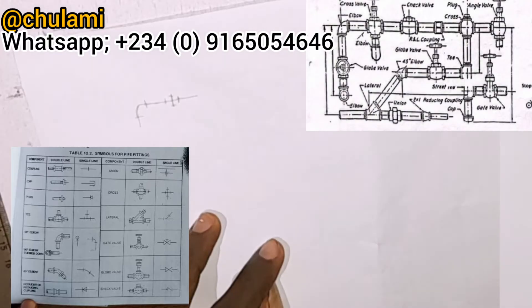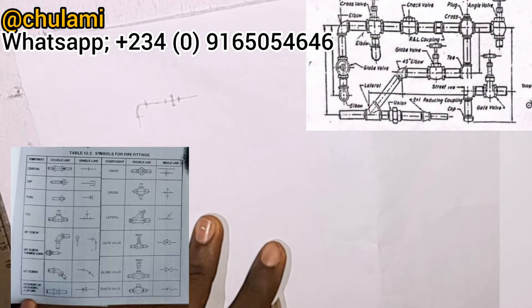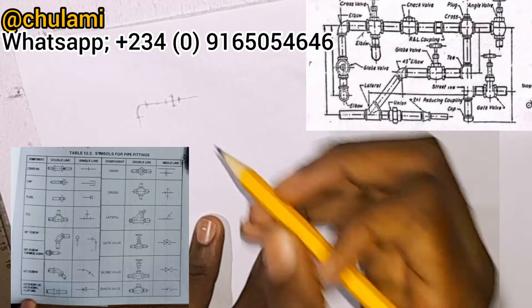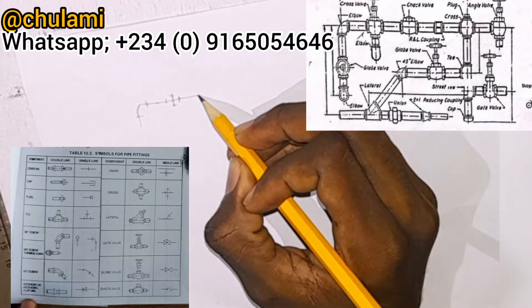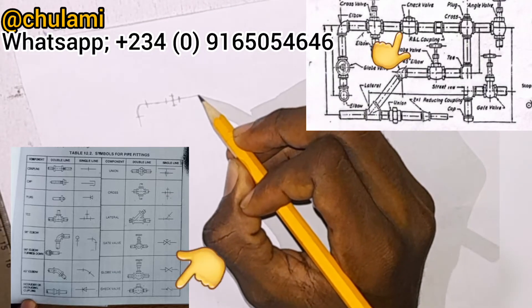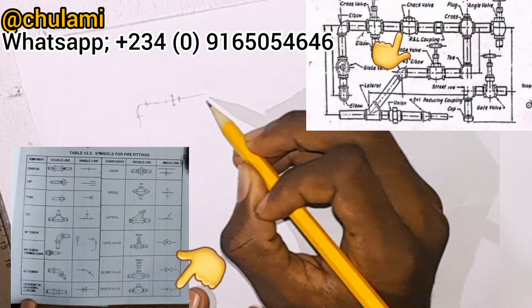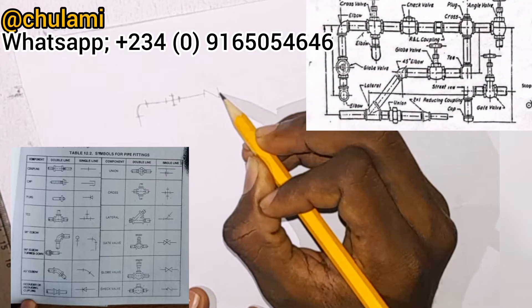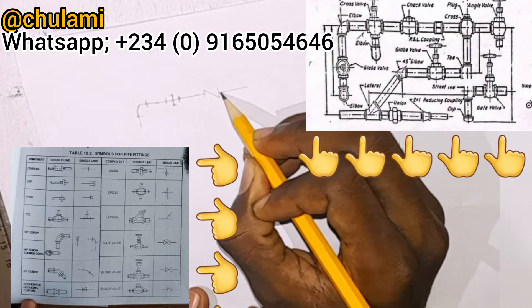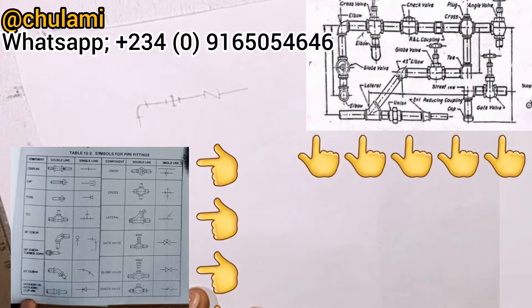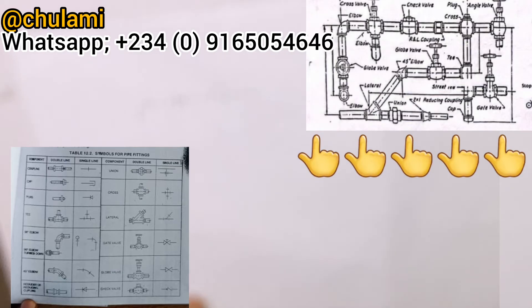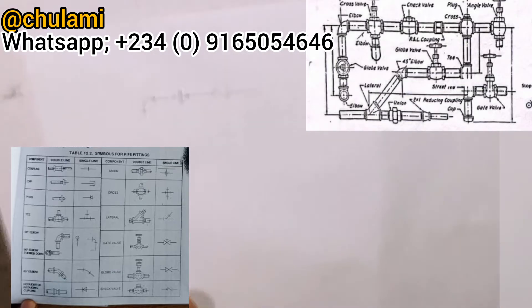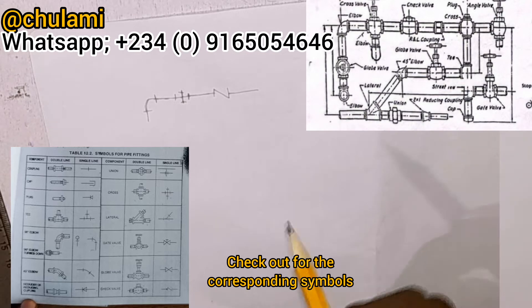Continuing our pipeline navigation, we then have a check valve. The symbol for a check valve is drawn something like this. This is all about representing these diagrams with their symbols — that's the most important thing about pipeline drawing.